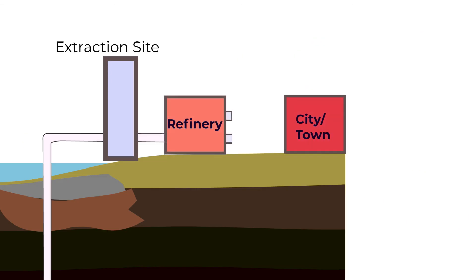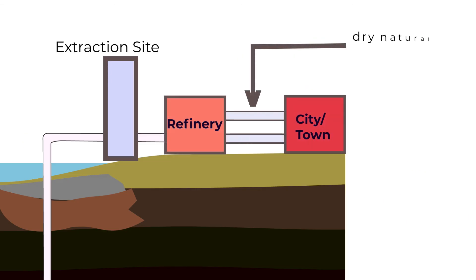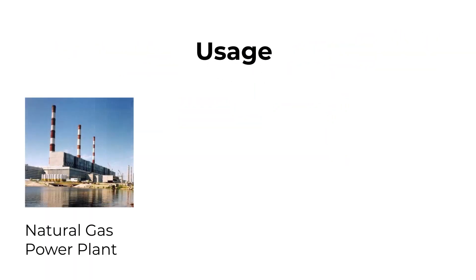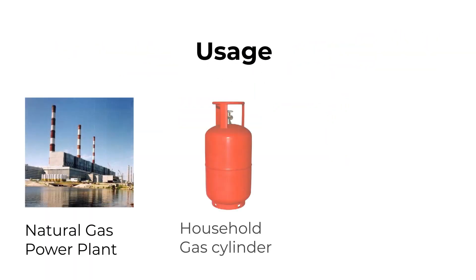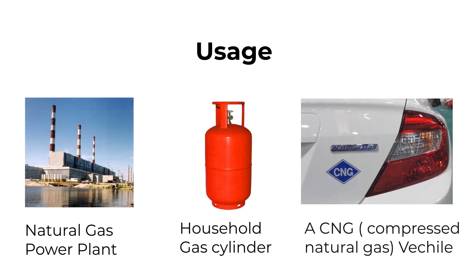After refining, natural gas becomes dry and is called pipeline quality gas. Natural gas is used in power plants, industries, households, and vehicles.